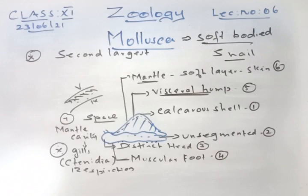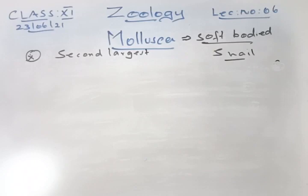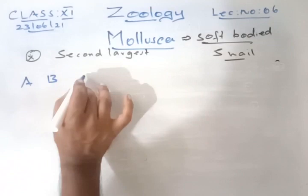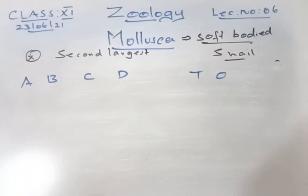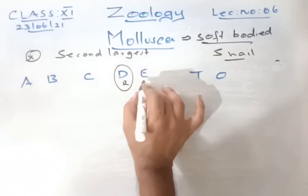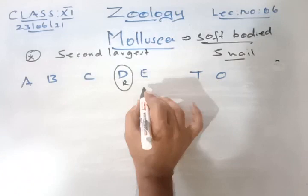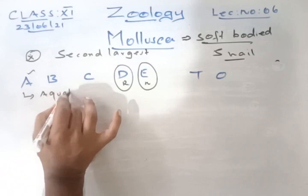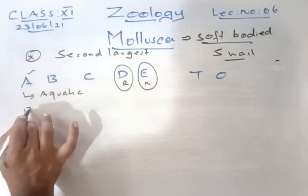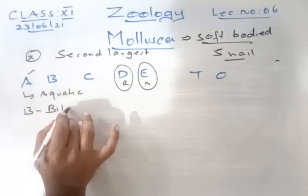I will give you a statement to remember Mollusca: ABCDTO (or ABCDEN). A is for aquatic organisms, B is for bilateral symmetry — except in univalves like the apple snail.